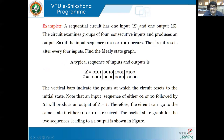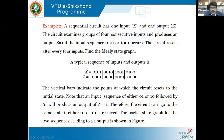The second example: a sequential circuit has one input X and one output Z. The circuit examines groups of four consecutive inputs and produces an output Z equal to 1 if the input sequence 0101 or 1001 occurs. The circuit output should become 1 if we encounter the sequence 0101 or the sequence 1001. The circuit resets after every four inputs — after every four bits, the circuit should reset.